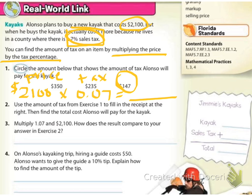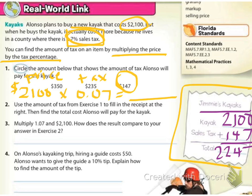So $147 is how much tax you're going to pay for a $2,100 kayak. Number two says use the amount of tax from exercise one to fill in the receipt at the right. So go ahead and copy this down. It's Jimmy's Kayaks. The kayak is $2,100. The sales tax is $147. And so the total is $2,247. So if Alonzo shows up with just $2,100 in cash, he's not going to be able to buy this kayak. He needs to have $2,247.